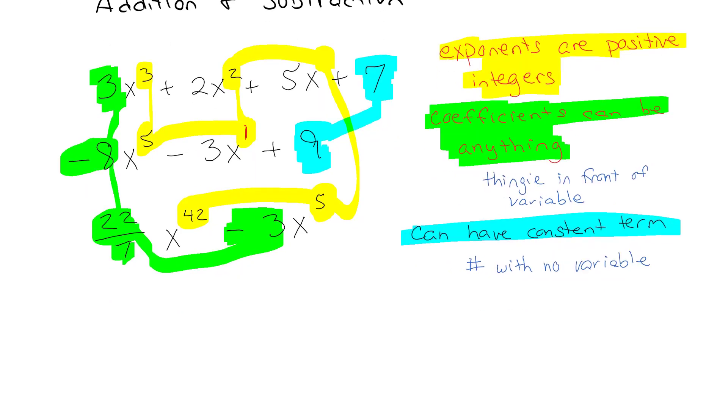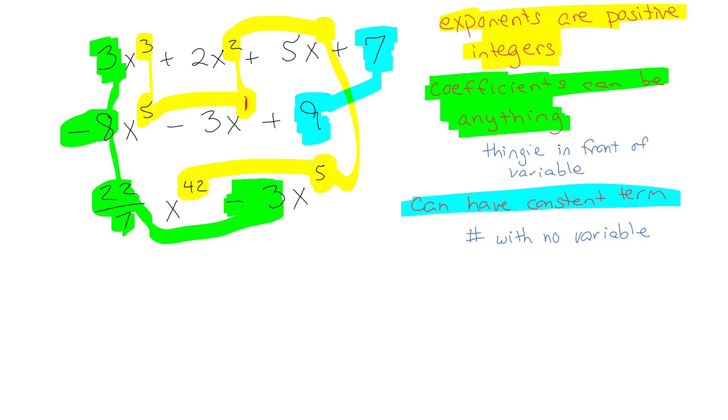So another thing that we can talk about when we talk about polynomials is the degree of the polynomial, and the degree of the polynomial is the highest exponent, not like the tallest, but the largest exponent. So the degree for this one would be 3 because that's the highest exponent. The degree for this one would be degree 5, and this would be a degree 42 polynomial. That's just basic vocabulary.